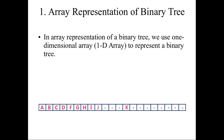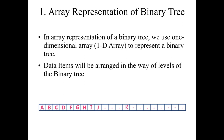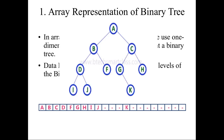To do array representation we have to take a one-dimensional array. In this one-dimensional array we have to represent the binary tree level by level. Also, we have to represent each level from left to right. So for this example we have to represent this binary tree in a single-dimension array, level by level.